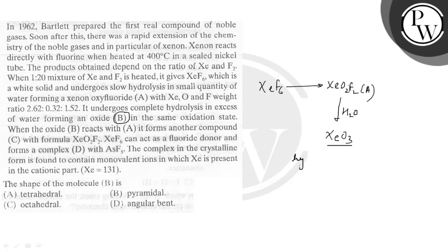So here the hybridization is: number of valence shell electrons, that is 8, plus monovalent atoms - here no monovalent atoms - plus minus charge, upon 2. So here 8 by 2, that equals to 4, that is SP3 hybridization.